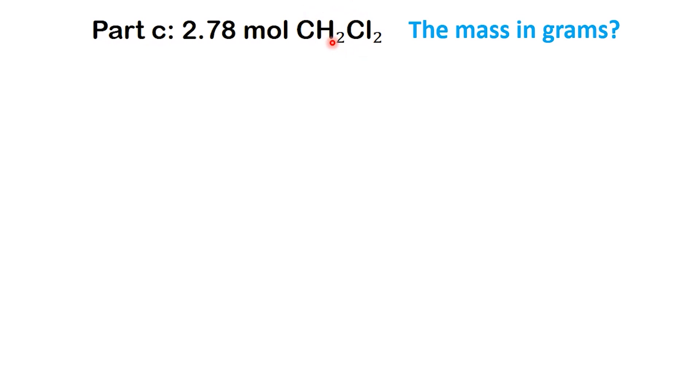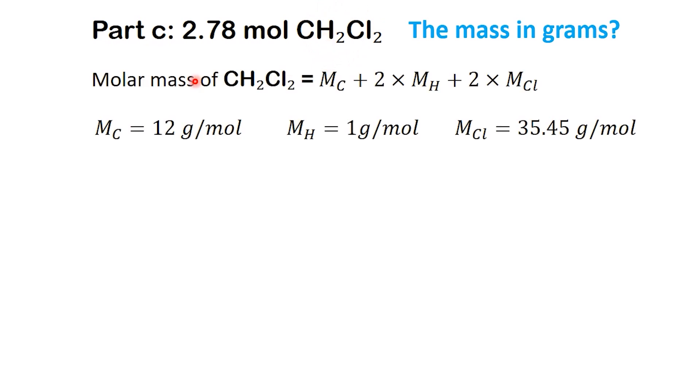But in this example, we're dealing with a compound, CH2Cl2, also known as dichloromethane. That means we need to calculate its molar mass by adding together the masses of all the atoms in its formula. Once we do that, we'll use the same method as before: multiply by the molar mass to find the mass in grams.